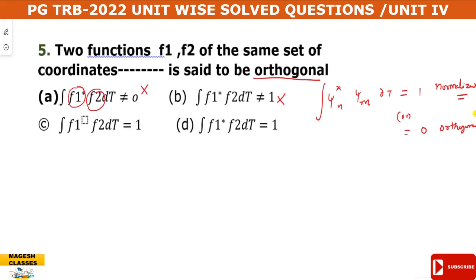If we define the functions F1 and F2, function number 5 is an instance of the F1 function and the format changes accordingly. The orthogonality answer is that the integral equals zero.